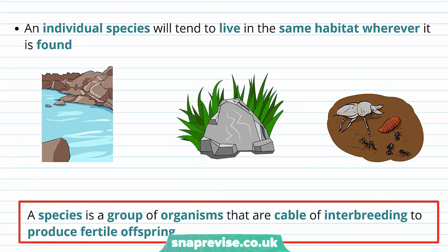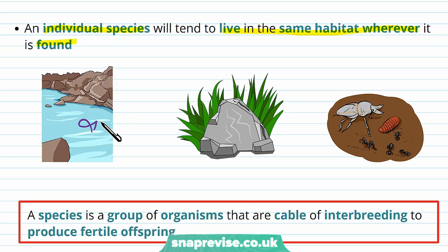An individual species will tend to live in the same habitat wherever we find it, because they tend to stay in that habitat due to the way they're adapted to it. For example, a particular fish will normally be found in the rivers where it lives, and particular insects will be found on parts of the ground or under rocks, but not in the river.